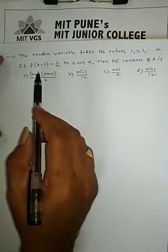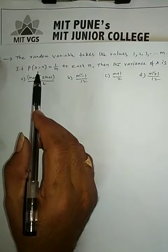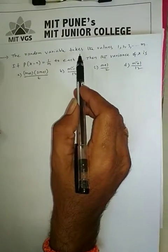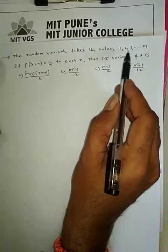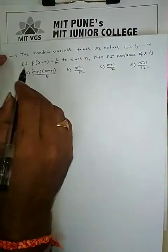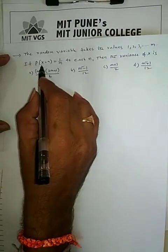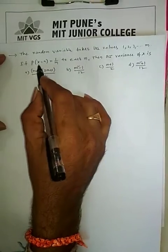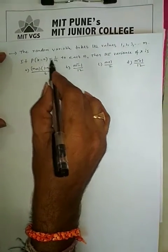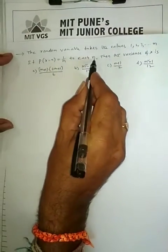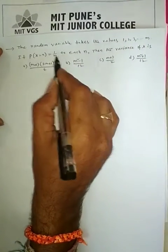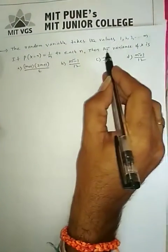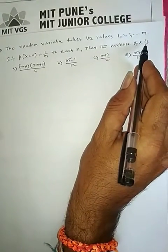Hello students. Here I have one more problem based on random variables. The random variable X takes the values 1, 2, 3, up to M. If P(X = N) = 1/M for every value of N, its probability value is 1/M. Then the variance of X is?